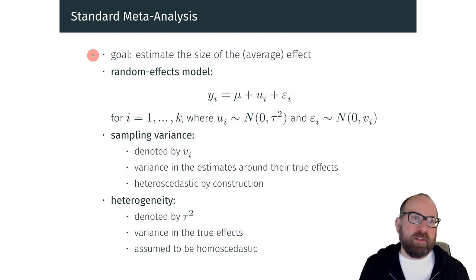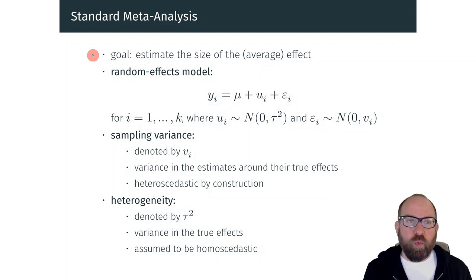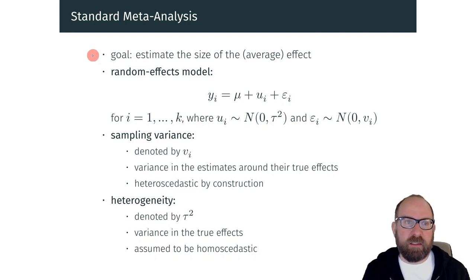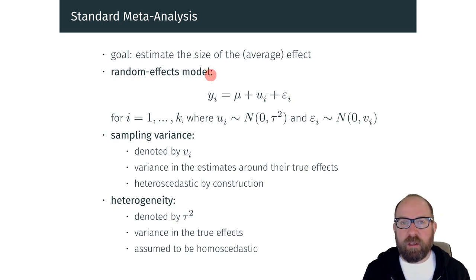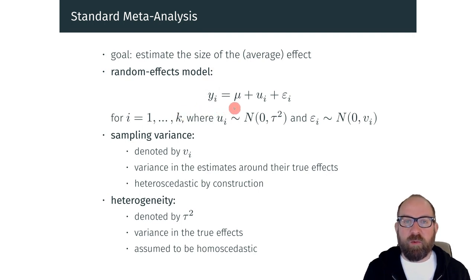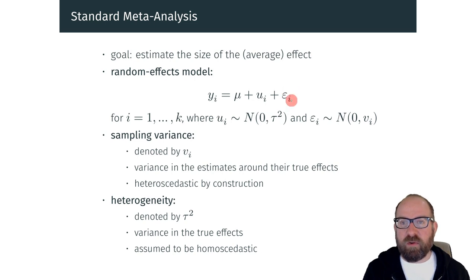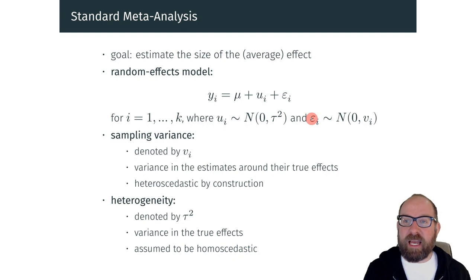To get started, let's first talk about a standard meta-analysis and one of its main goals, namely to estimate the size of the average effect. For this we typically use a random effects model, which says that for every study we have an observed effect for each of our case studies. And what we want to estimate here is mu, the average effect, but there are two sources of variance. First of all, there is epsilon sub i, which represents sampling variance.